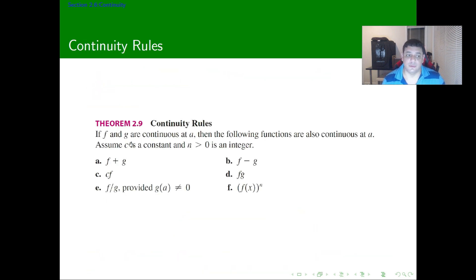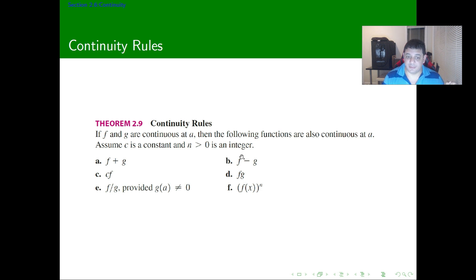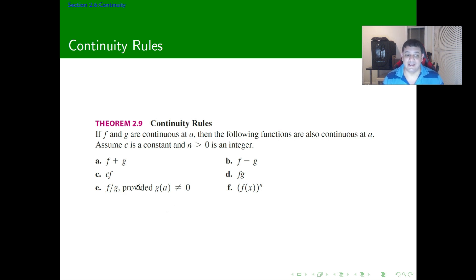Let's see some continuity rules. If f and g are continuous functions at a point a, then the following are also continuous at a: the sum, subtraction, and product are continuous; multiplication by a scalar is continuous; any power is continuous; and the quotient is continuous provided it doesn't make the denominator zero.